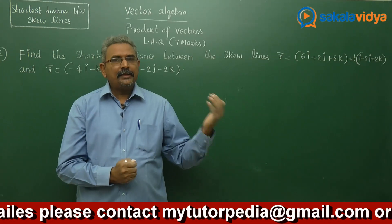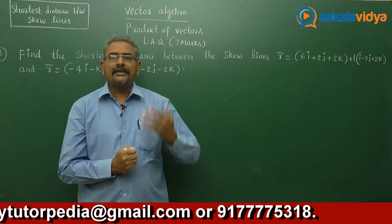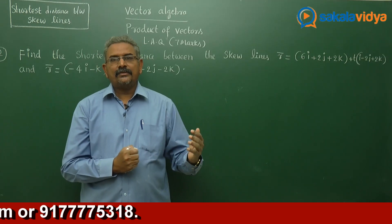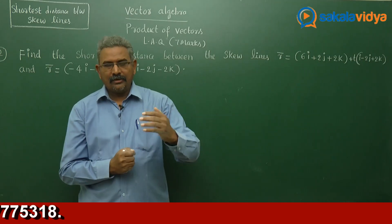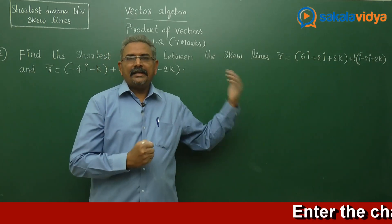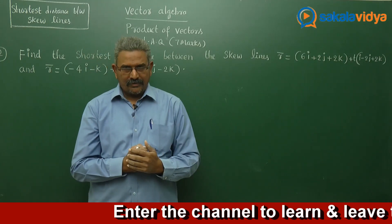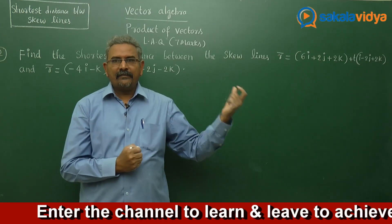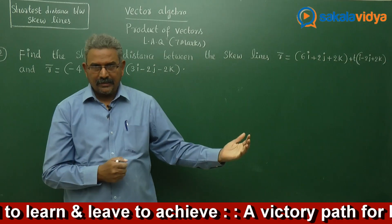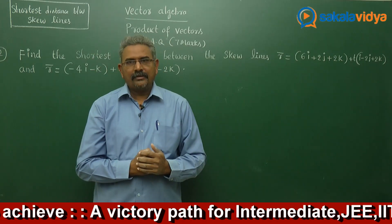I already discussed this in the previous episode. So let us solve this problem step by step. First, we have to compare the given equations with r bar equals a bar plus t times b bar, and write down a bar vector and b bar vector. Then compare the second line equation with r bar equals c bar plus s times d bar, and write down c bar and d bar vectors, following the procedure we have discussed.